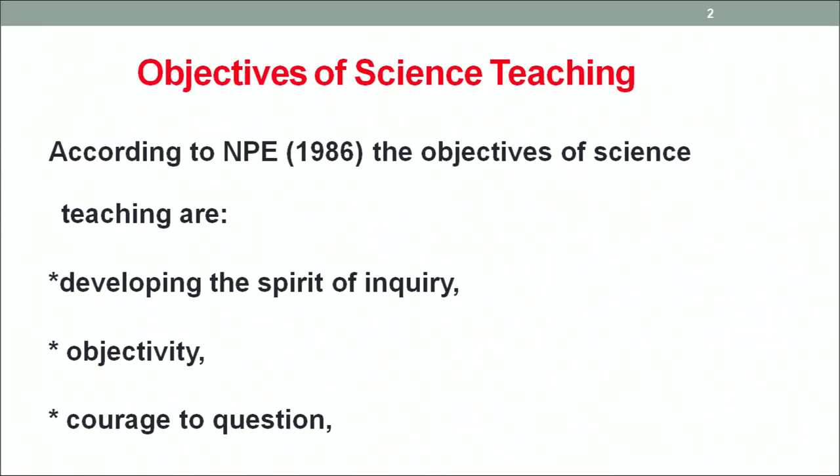Another objective is developing objectivity among students. They should avoid subjectivity and focus on objectivity. The difference is that 'the sun is a star' is objectivity — it is a scientific fact. But 'the sun is an angel and people of certain faith offer holy water to it' becomes a matter of subjectivity. Objectivity means universal acceptance of a thing.